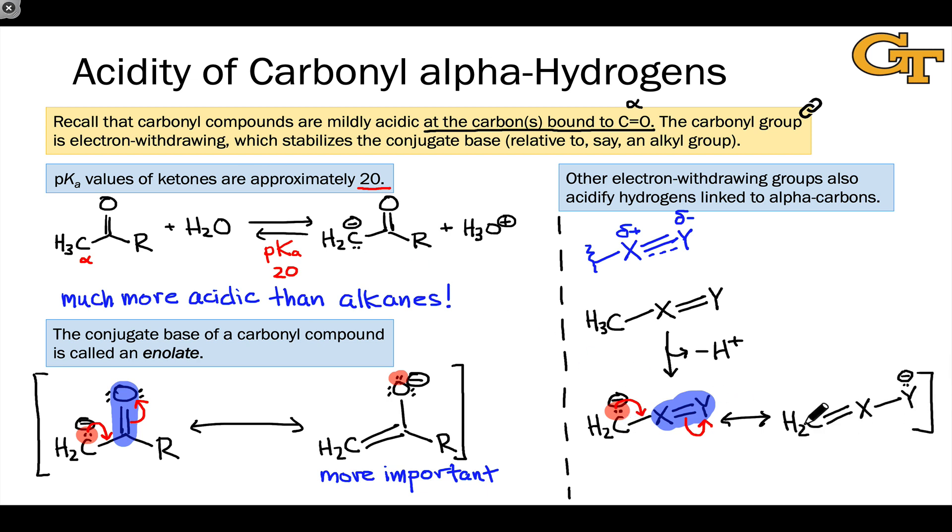It's this sharing of negative charge and the resonance structures that illustrate it that help explain why alpha carbons—carbons alpha to electron withdrawing groups—are relatively acidic, relative to, for example, unsubstituted alkanes.